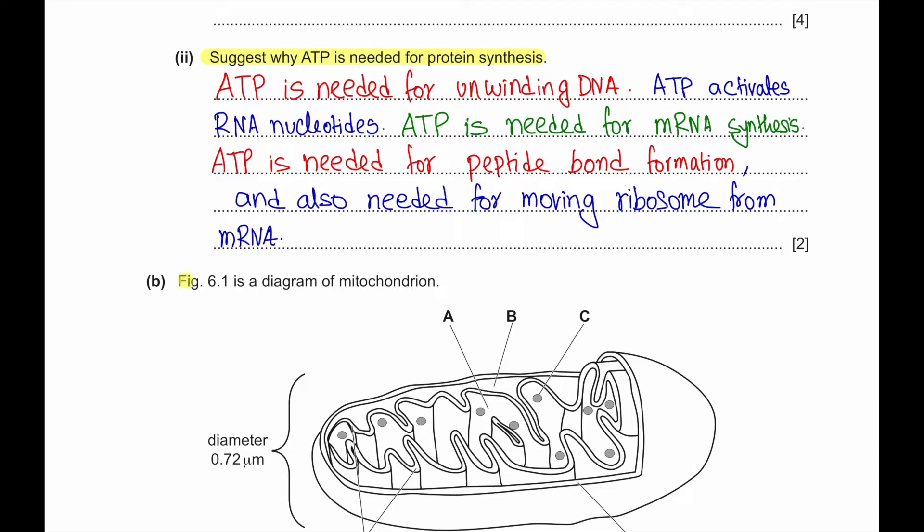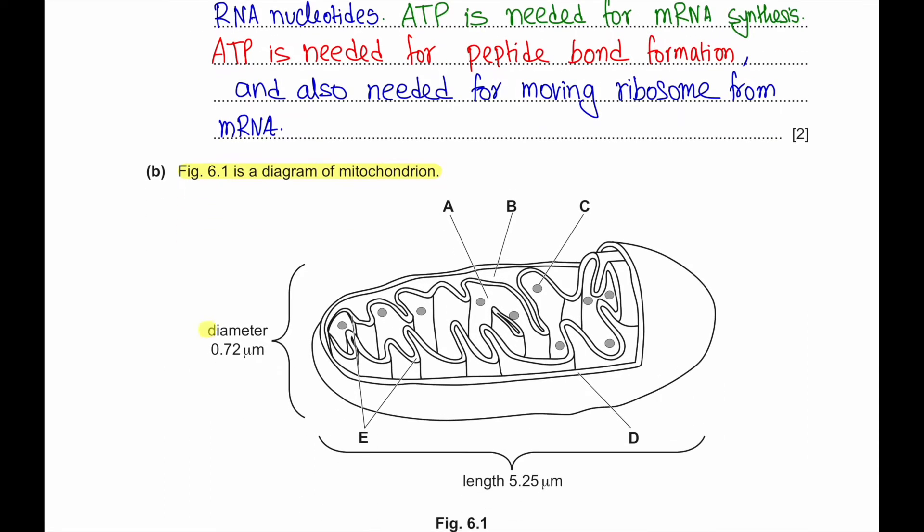Part B: Figure 6.1 is a diagram of a mitochondrion. The diameter is 0.72 micrometer and the length is about 5.25 micrometer. Inside the mitochondrion we can see the outer membrane, E which is the inner membrane, A is the matrix, B is the intermembrane space, and C can be ribosome.